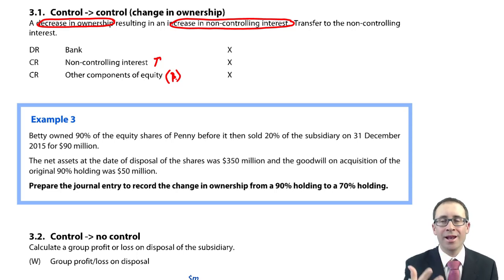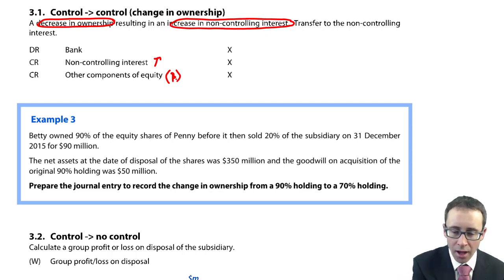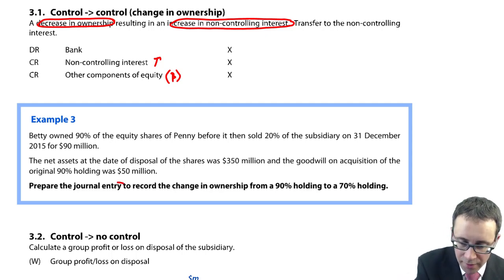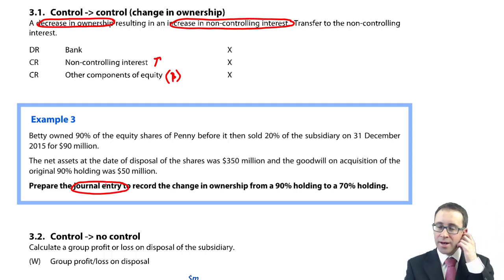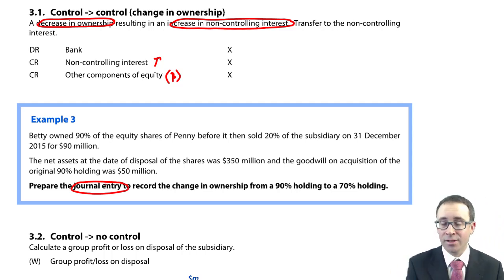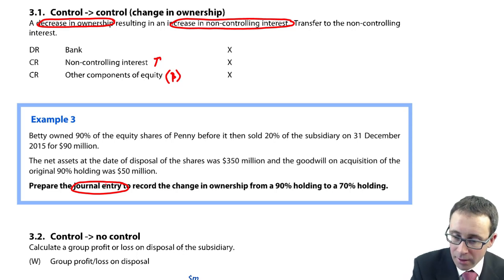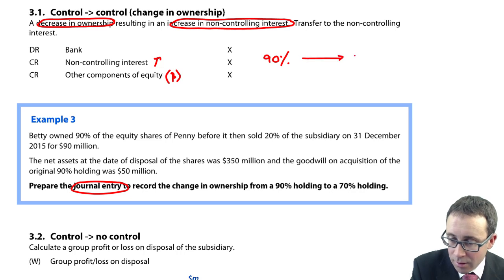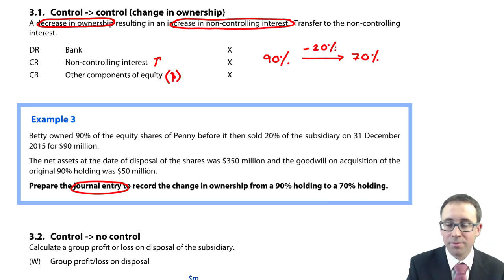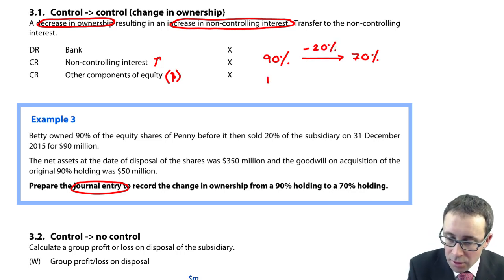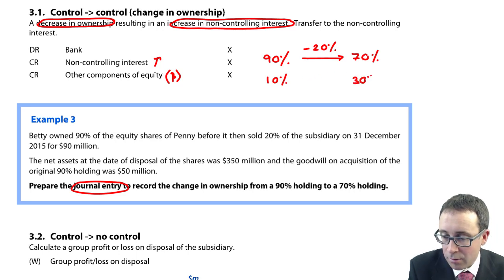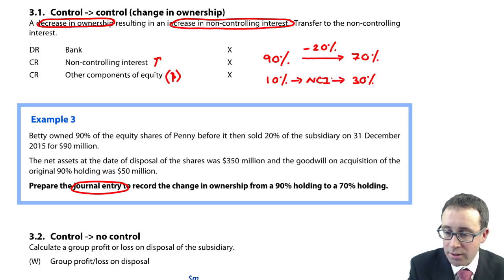So let's go through and see it in a little bit more detail with the example. It wants us to prepare the journal entry to record the change in ownership from a 90% holding to a 70% holding. So what you've got there is that we had 90%. We're now going down to 70% because we've disposed of a 20% holding. So we had 10% NCI and we now have a 30% non-controlling interest.